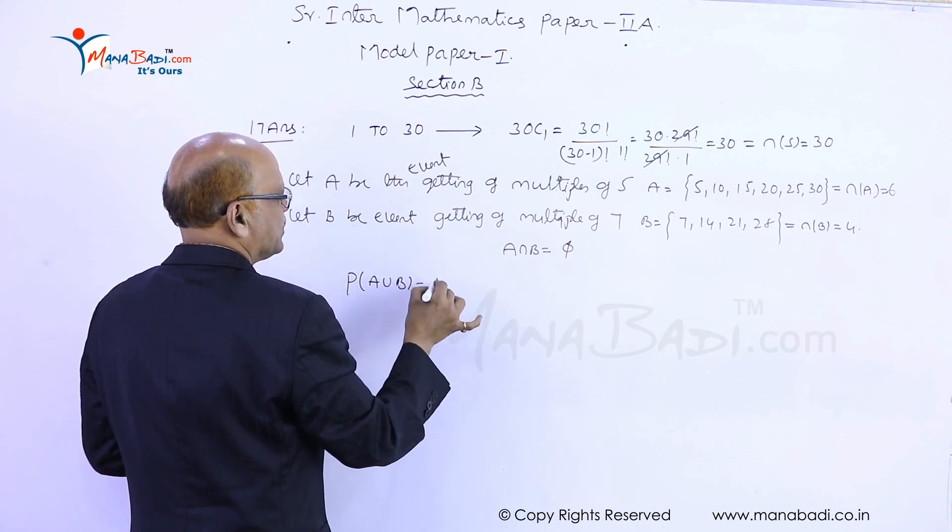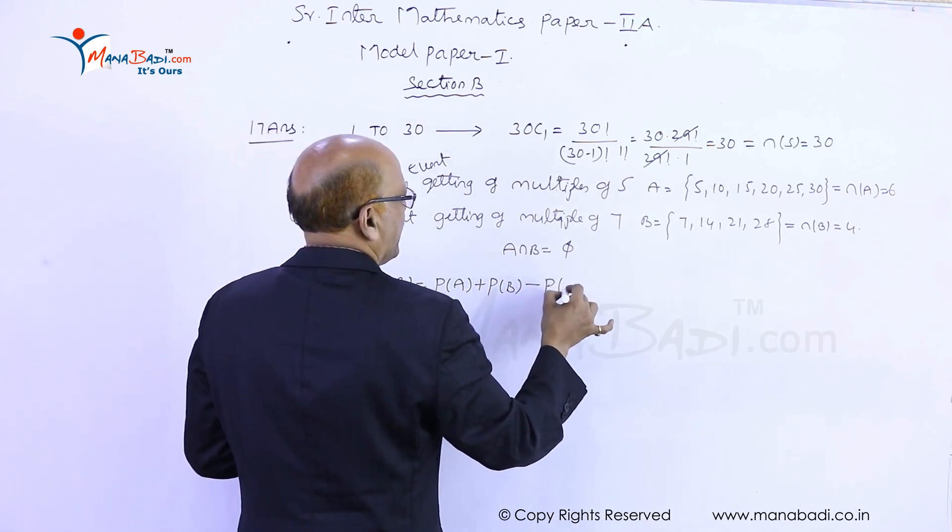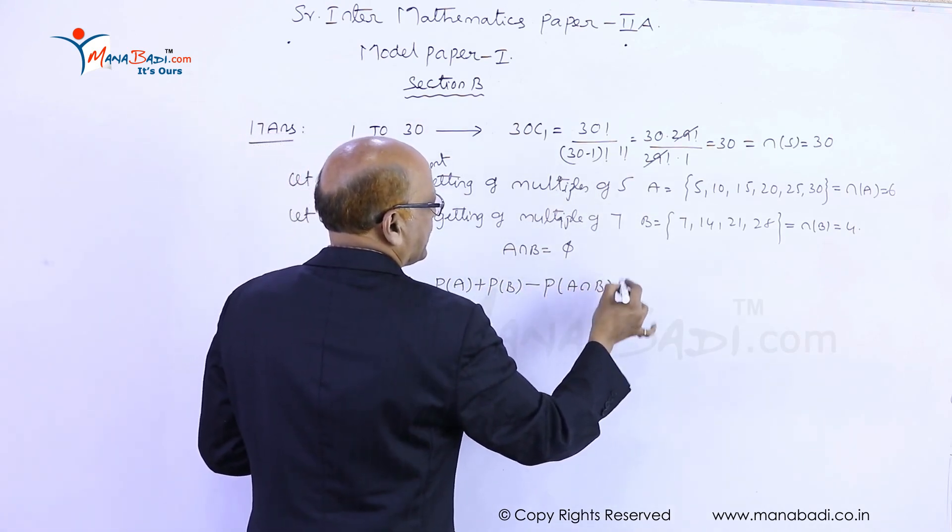Now we know that probability of A union B equals probability of A plus probability of B minus probability of A intersection B.